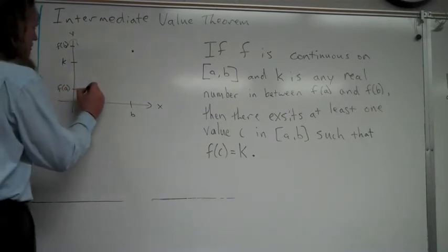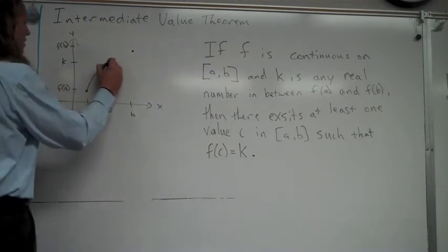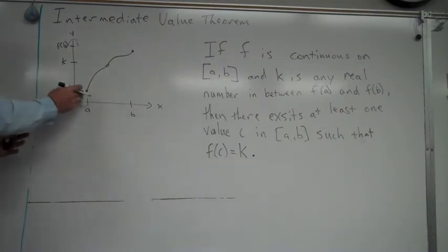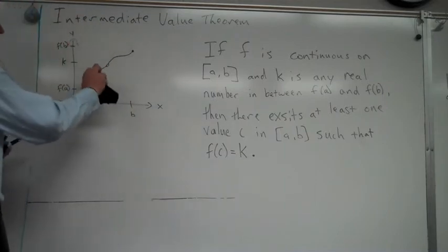If it's not continuous, well we could do something for instance like this. And clearly we could draw something that's not continuous. I put a hole in the graph there when it got to the y value of k, and it still was a function, still started at a, still finished at b, and it didn't pass through k, but again that was not continuous.